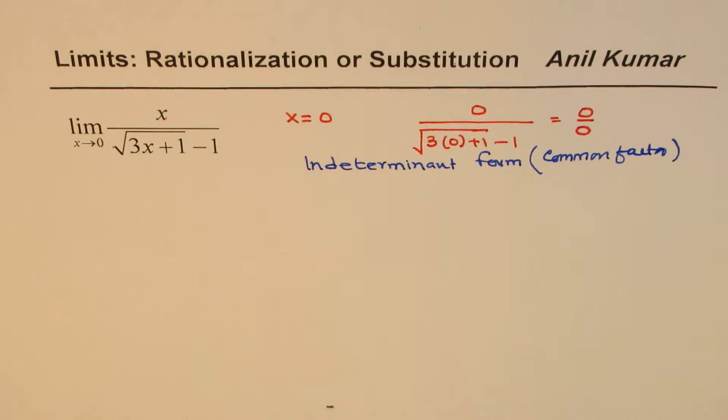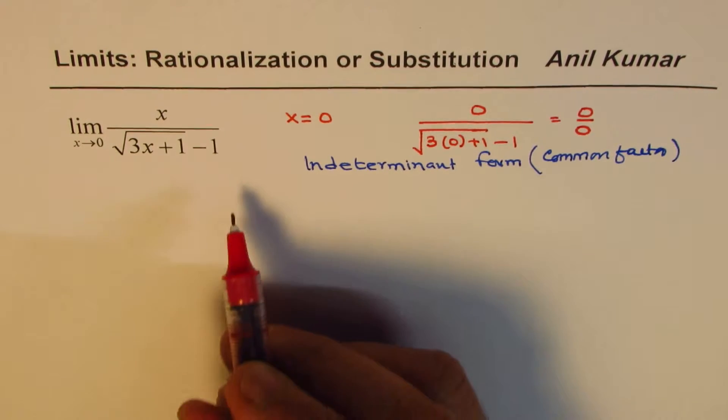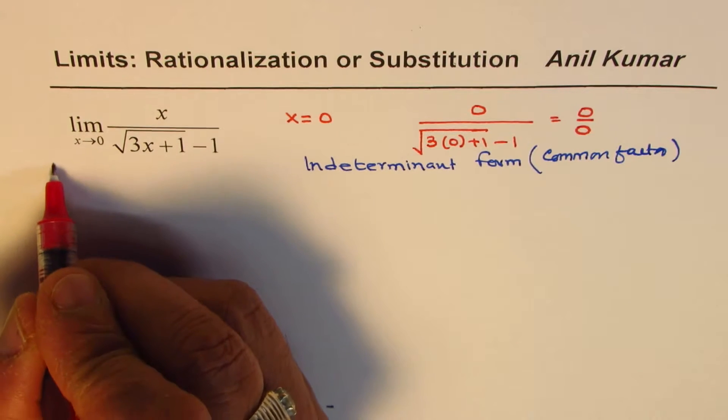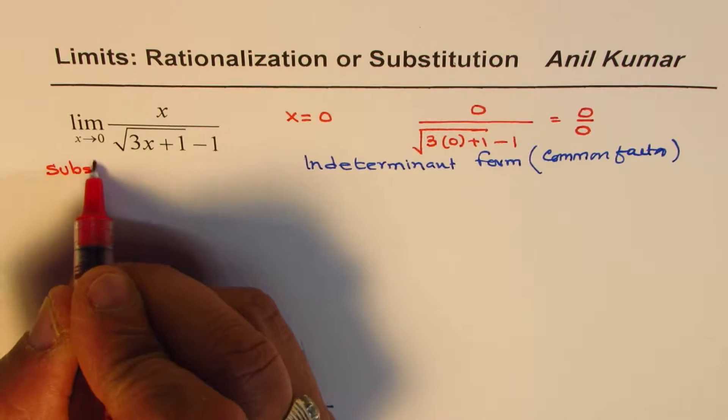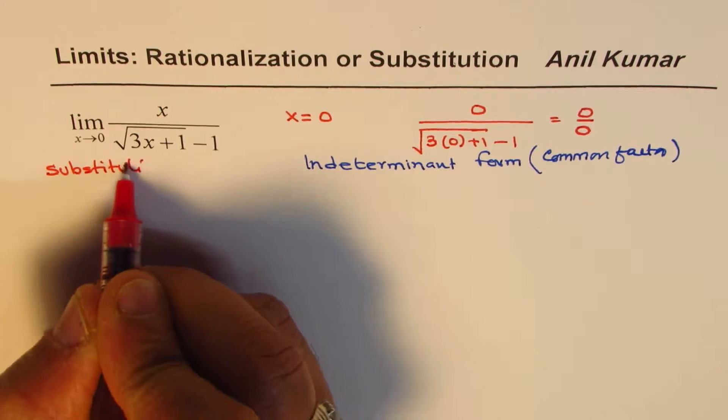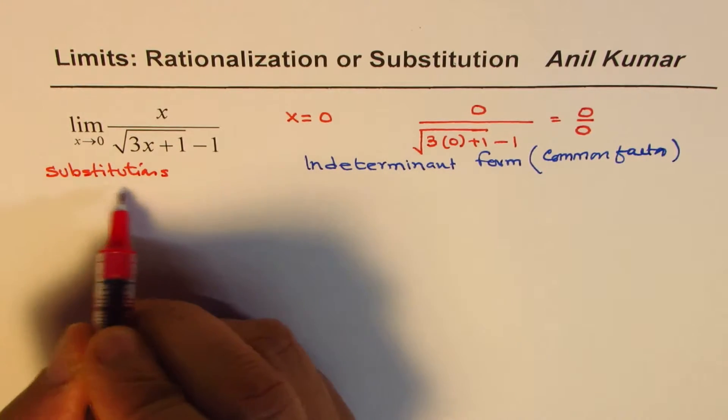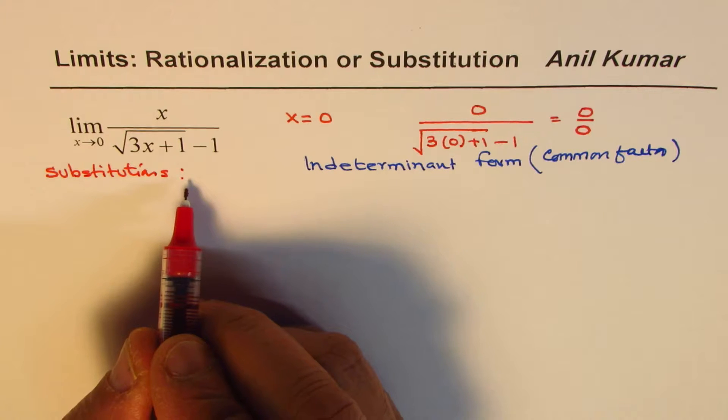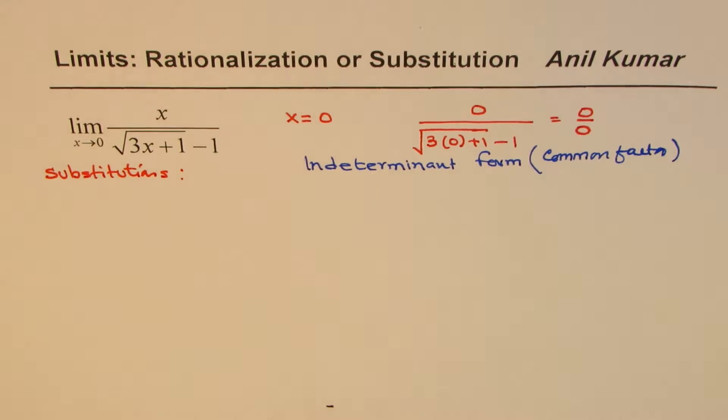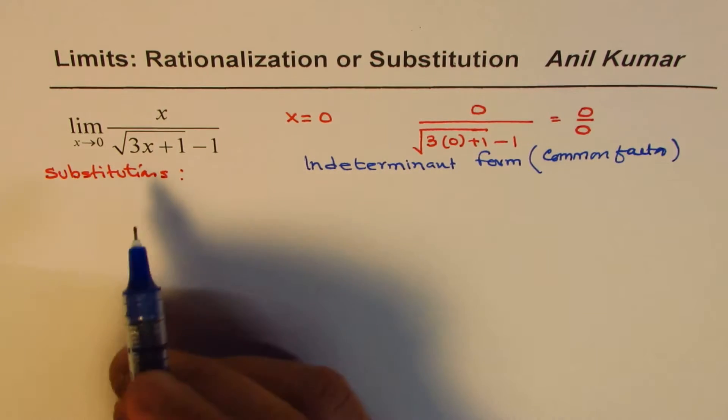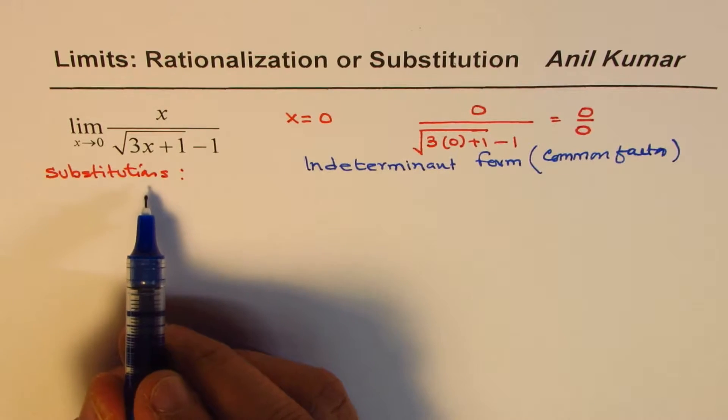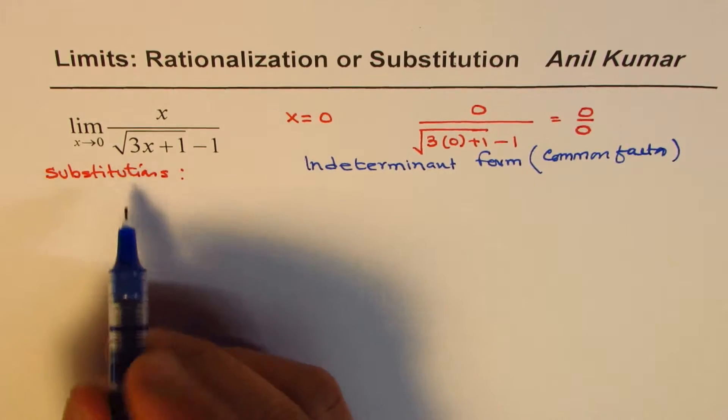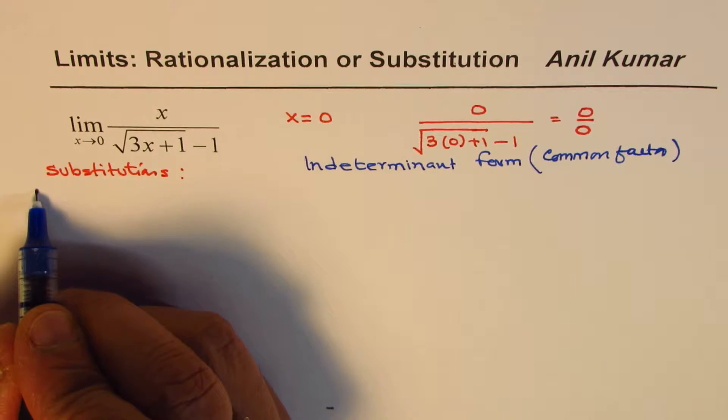So I will do the rationalization as a very standard technique to solve such limits problem as method 2. Let me begin with substitution method. Substitution is kind of tricky to adopt but it is good to learn. So we will extend this video by adding this method. So I am using substitution. It is not the first choice, let us be very clear. It is not the first choice but somehow I like it.